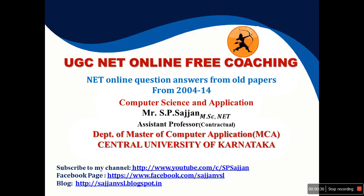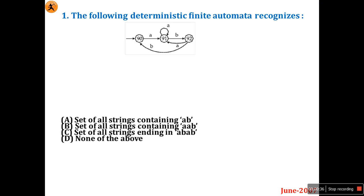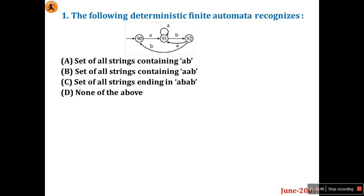Today I'll start the new series — June 2007. We'll look at question one: the following deterministic finite automata recognizes... There is some complexity in the given question — there is no final state shown. Anyhow, consider Q2 as the final state. Initially you are in state Q0, read 'a' to reach Q1, and reading 'a' again is a self-loop. Then read 'b' to reach Q2.